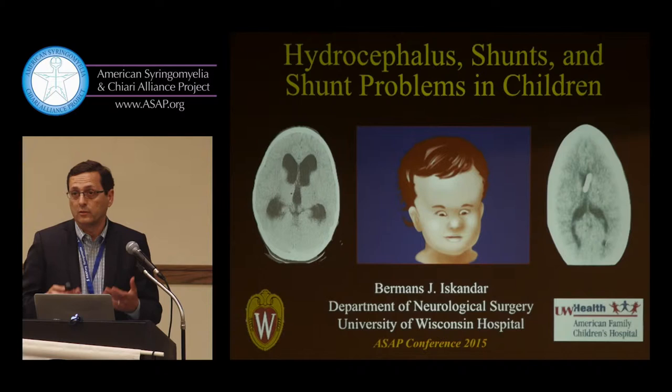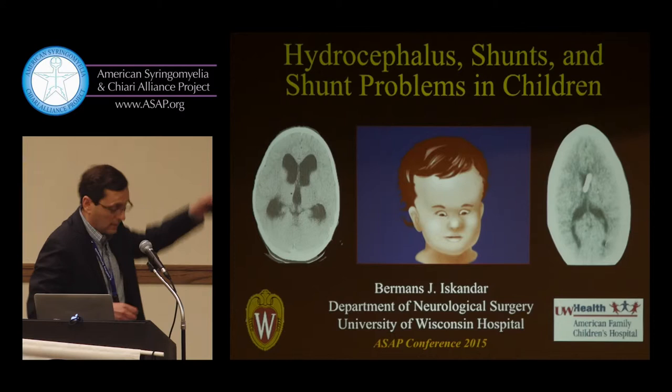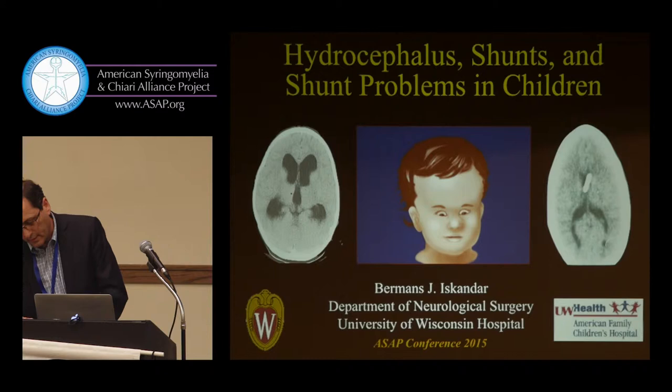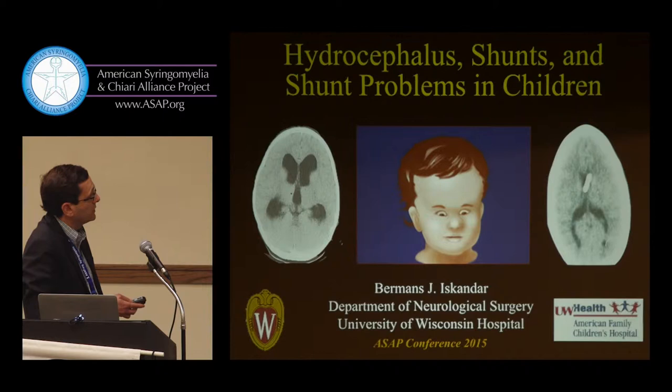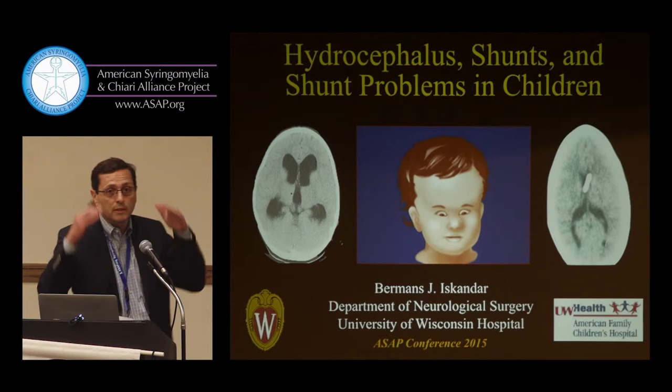For people who don't know what hydrocephalus is: hydrocephalus basically means that the ventricles are enlarged. The ventricles are the chambers that carry spinal fluid in the brain. On the left you see enlarged ventricles, on the right you see shunted ventricles where the ventricles have decreased in size because of the shunt tubing. In the middle is a child who has the typical 'sunset eyes' that you often see with severe hydrocephalus.